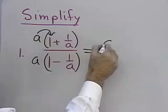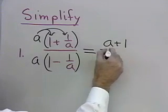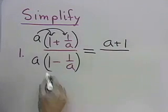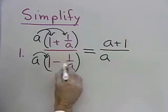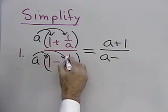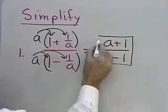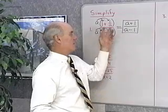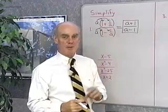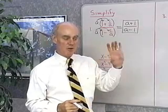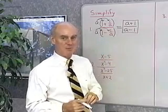a times 1 is a, and a times 1 over a is 1. In the denominator, a times 1 is a, minus a times 1 over a is 1. And there's the simplified version of my original complex fraction. I did it by finding the least common denominator for all the small fractions and multiplying the numerator and denominator of the complex fraction by that expression.